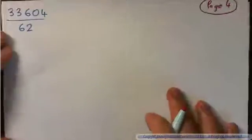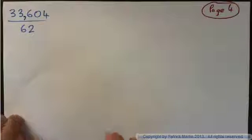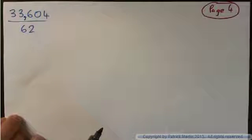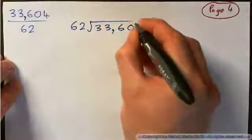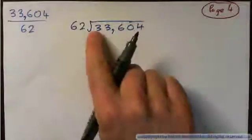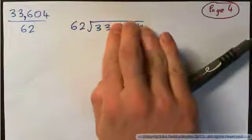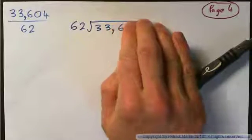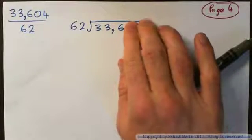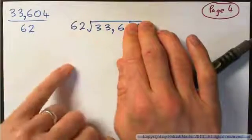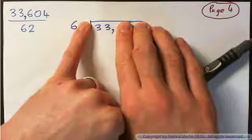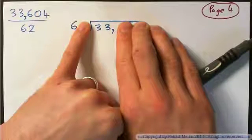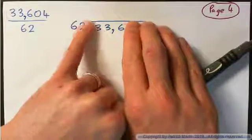Page 4: What if you had 33,604 over 62 written as a fraction? How could you set up the long division? You'd do 62 into 33,604. You start: 62 into 3 won't go, 62 into 33 goes 0 times, so look at 62 into 336. Since 62 is pretty much 60, it's basically 6 into 33 — about 5 times, because 5 sixes is 30.